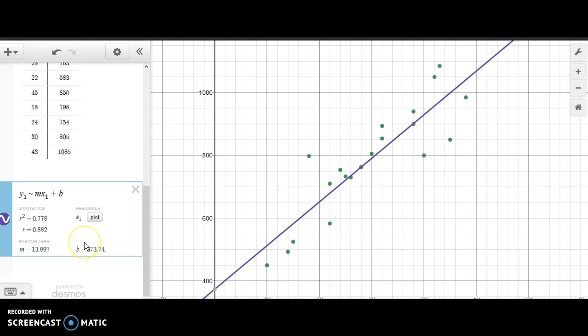But anyway, the number that we're looking at right now is 0.882. First of all, that number is positive, and we can see that the correlation is positive because it goes up from left to right. As X goes up, as your knowledge score goes up, your calcium intake also seems to go up.